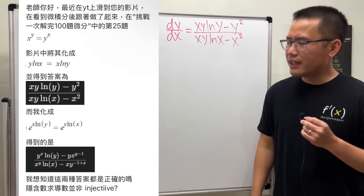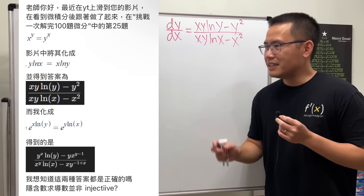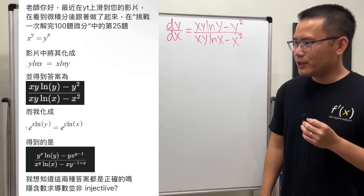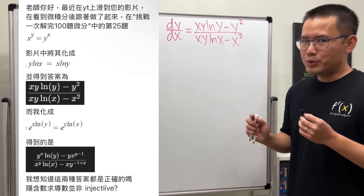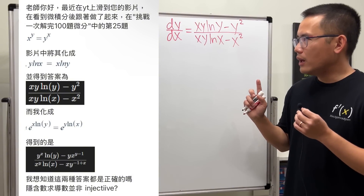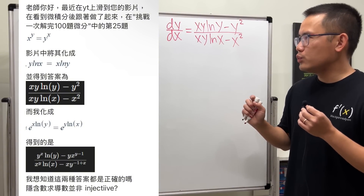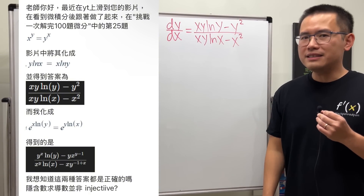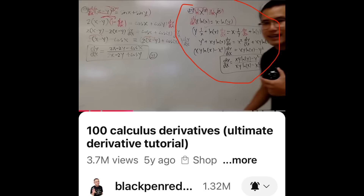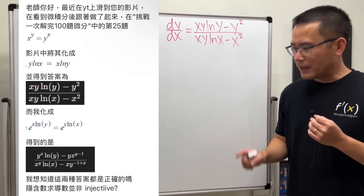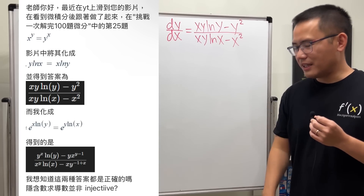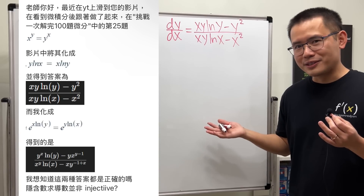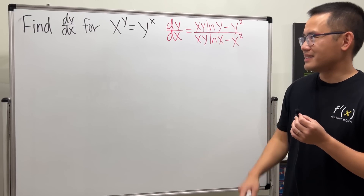I just received this email that says: 'Teacher, in your 100 derivatives video, number 25, the derivative for x to the y equals y to the x — this is the answer I got in the video, but that's also the answer he got. So how are they the same?' Well, let's take a look.